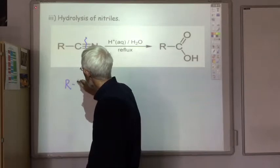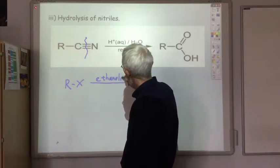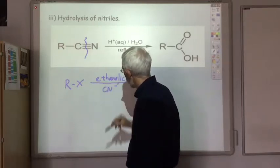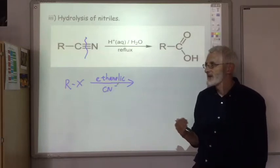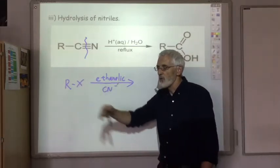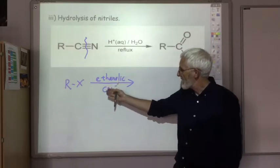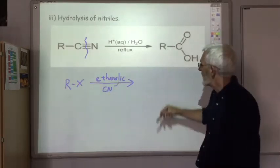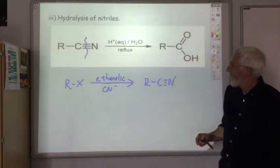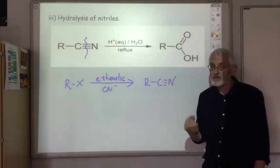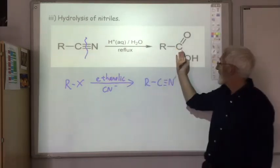If you had a halo alkane and you reacted it with ethanolic cyanide ion. Remember it's ethanolic because you didn't want water to be around, because if you had water around the halogen would be replaced by an OH to produce an alcohol. You get nucleophilic substitution, the CN substituting for the halogen giving you RCN. And then it was mentioned previously but we'll just reinforce it now. So then the acid hydrolysis of the CN bond can give you a carboxylic acid.